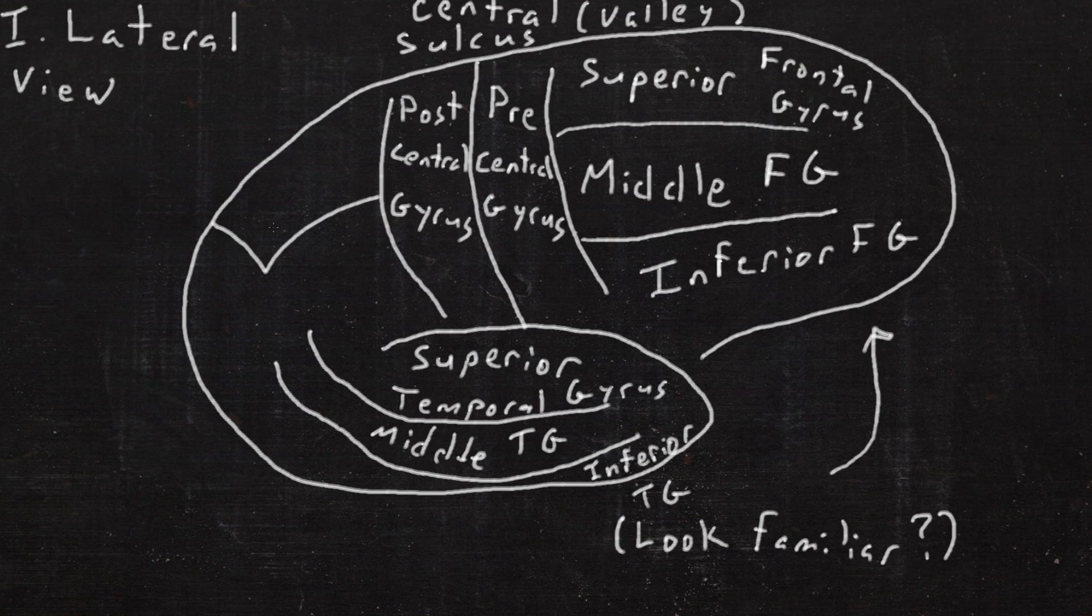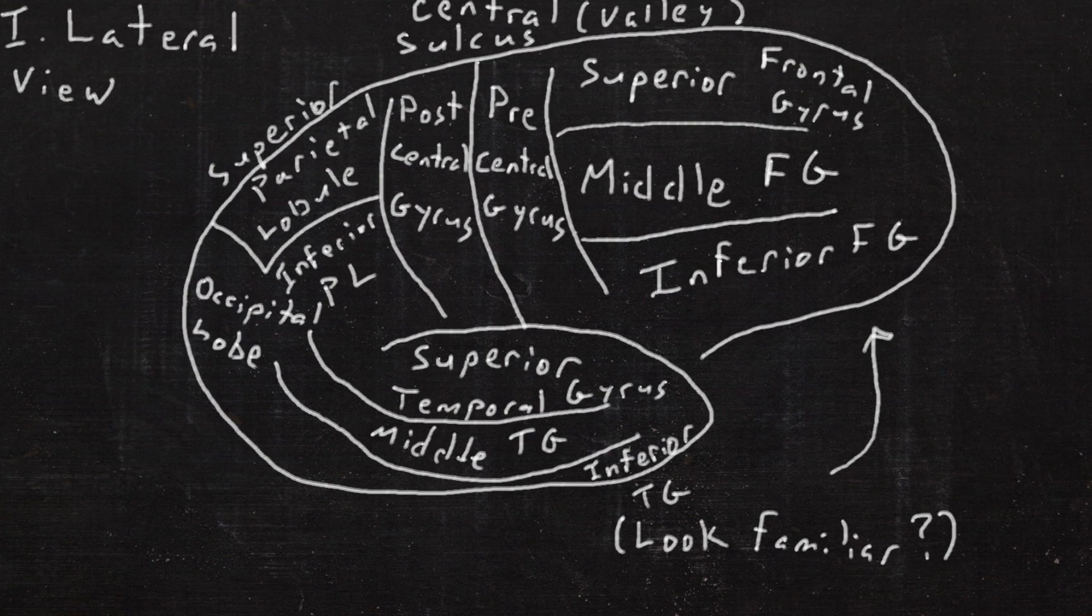There's only two divisions in the parietal lobe, superior parietal lobule, inferior parietal lobule, and the occipital lobe does not have gyral divisions.